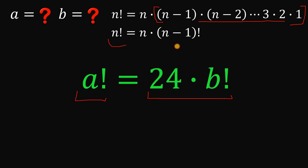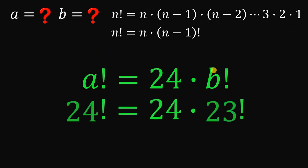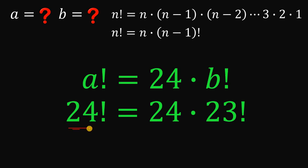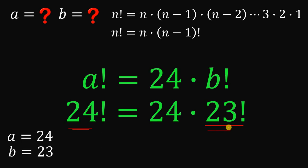Using this definition of factorial, we can say that if a is 24, then 24 factorial equals 24 times 23 factorial. So a must equal 24 and b must equal 23, which satisfies the given equation. We now have one pair for a and b.